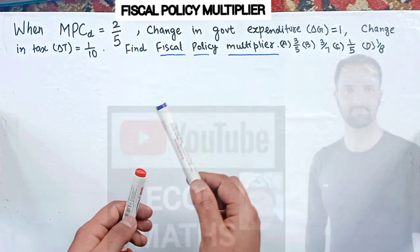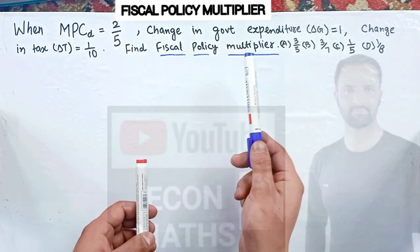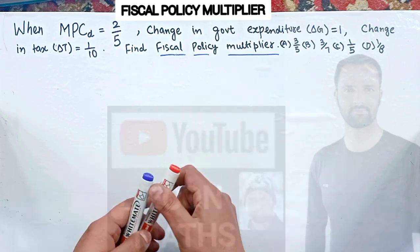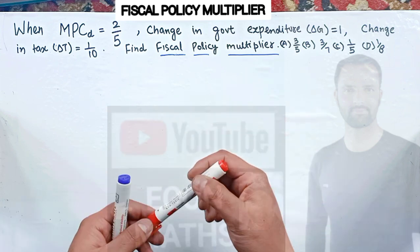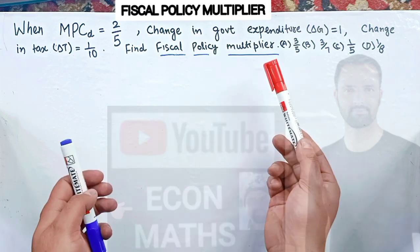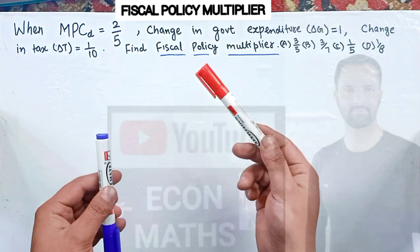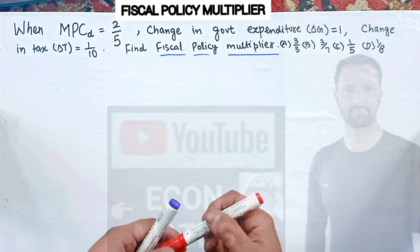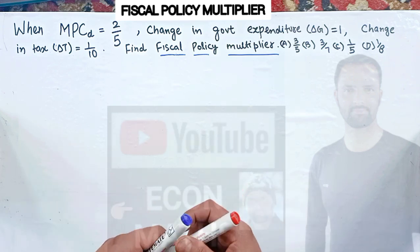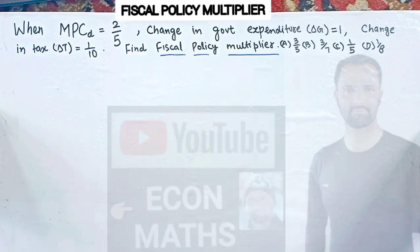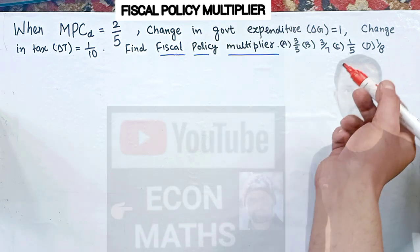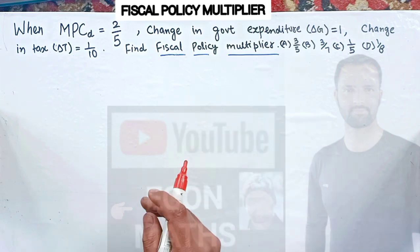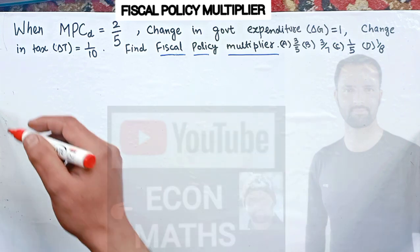Before we try to get the answer to this question, we need to find out the fiscal policy multiplier. First we need to derive the formula for the fiscal policy multiplier, and we will apply that formula in finding the solution to this question. Let us see how we find the fiscal policy multiplier.